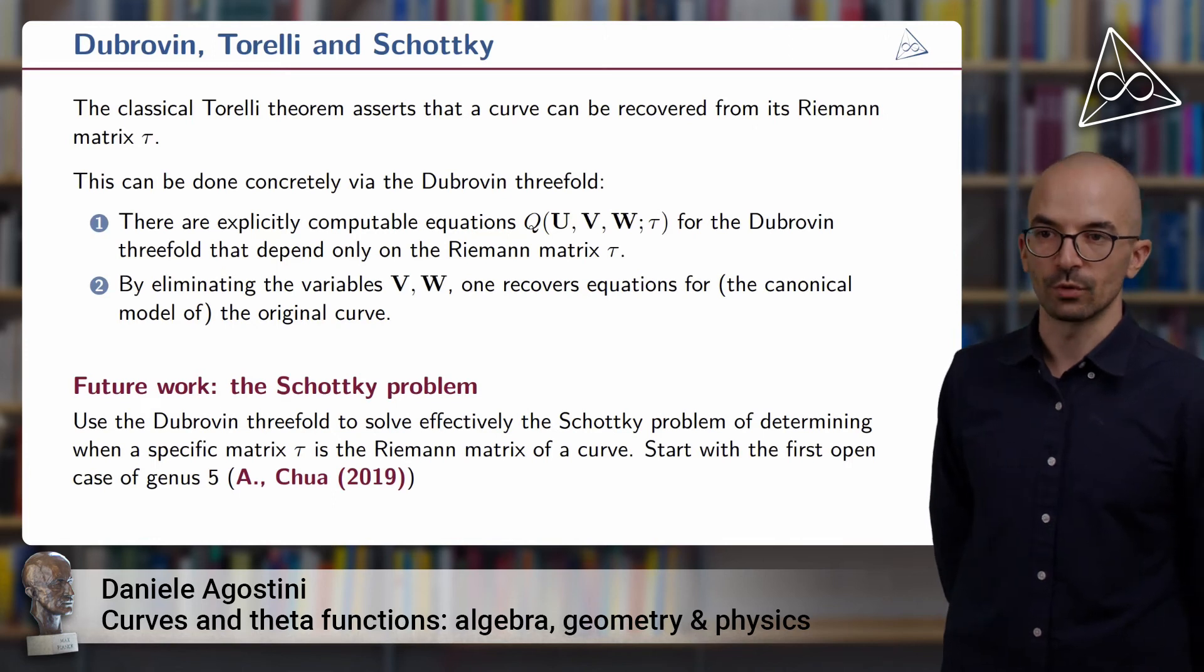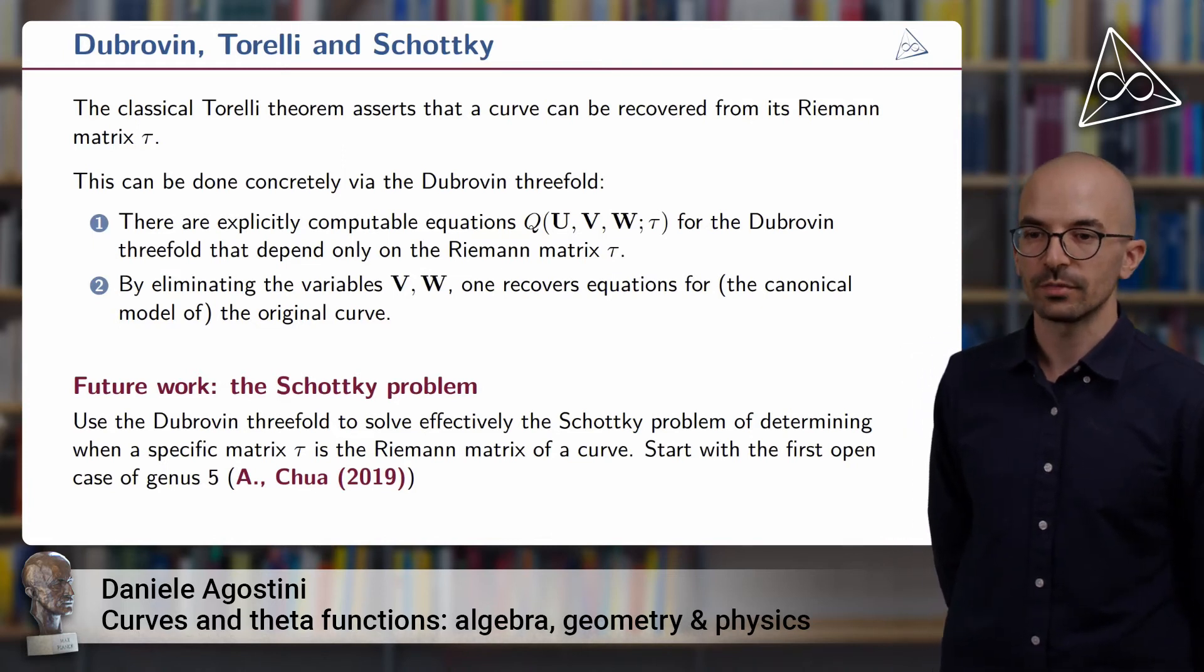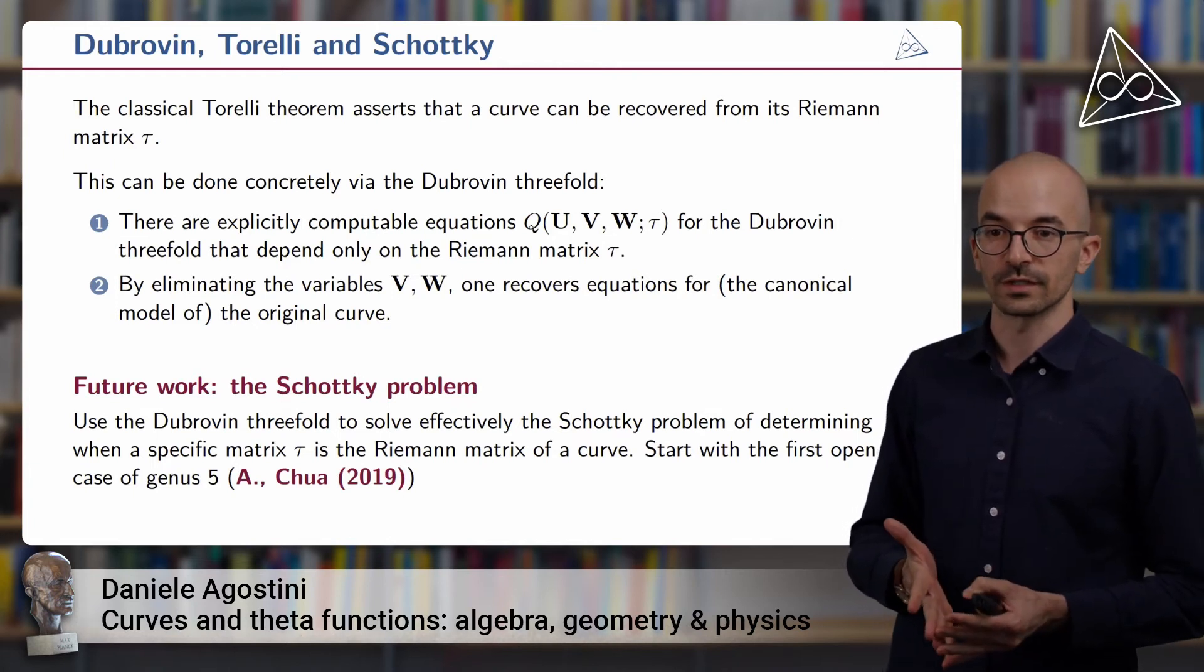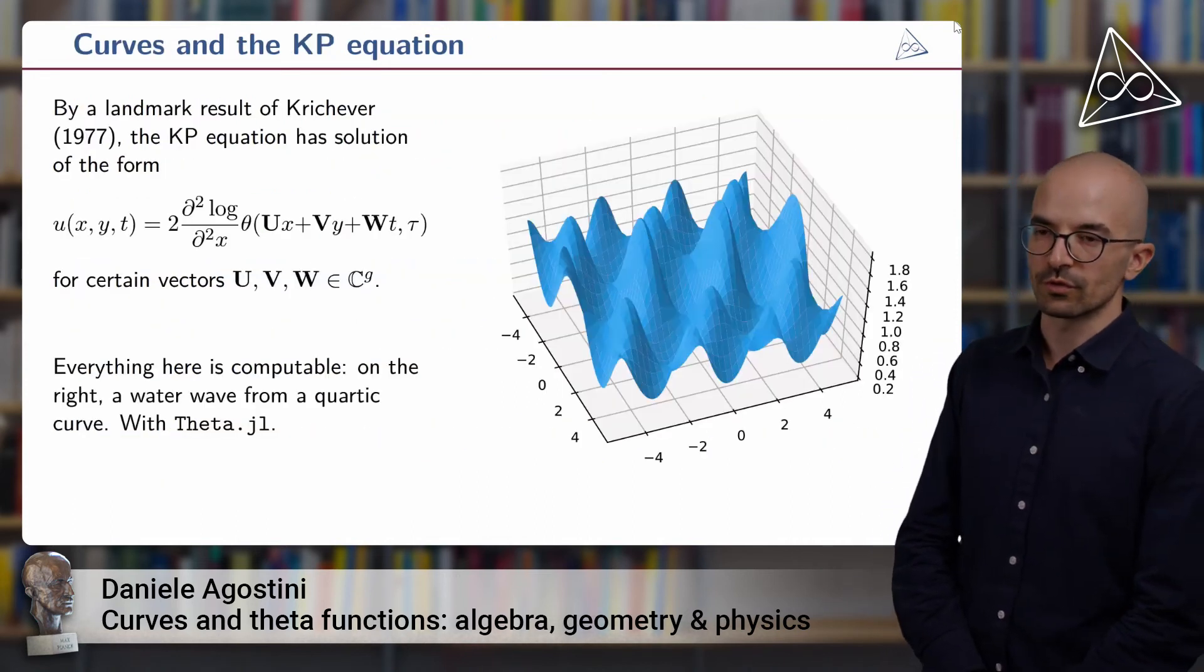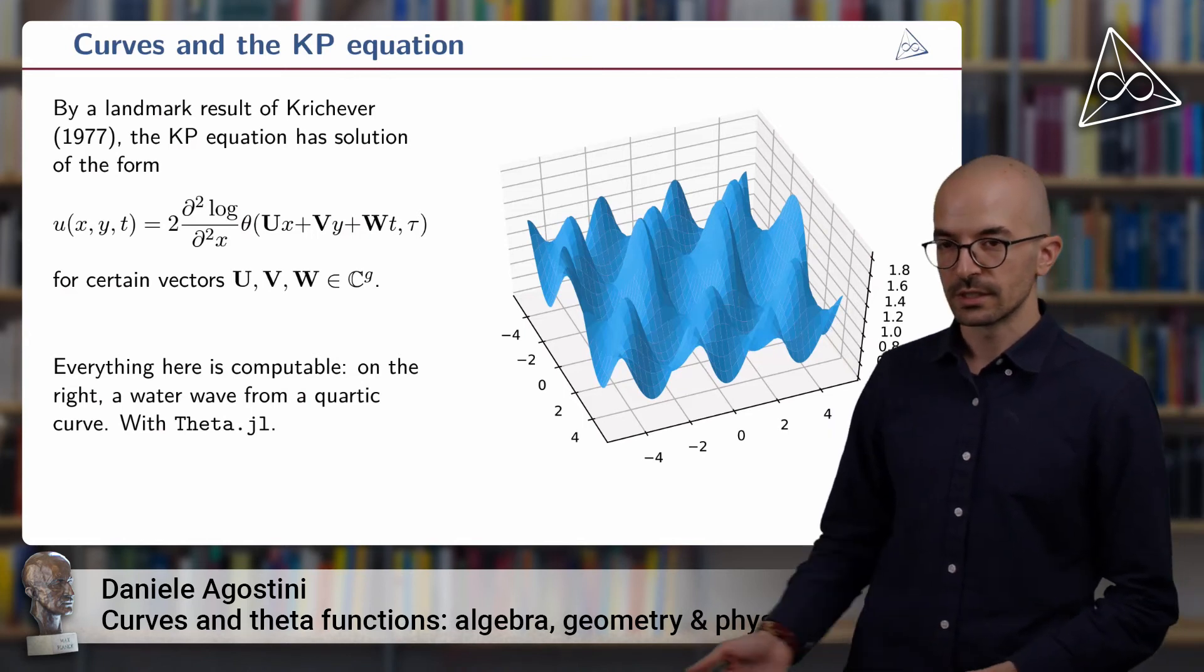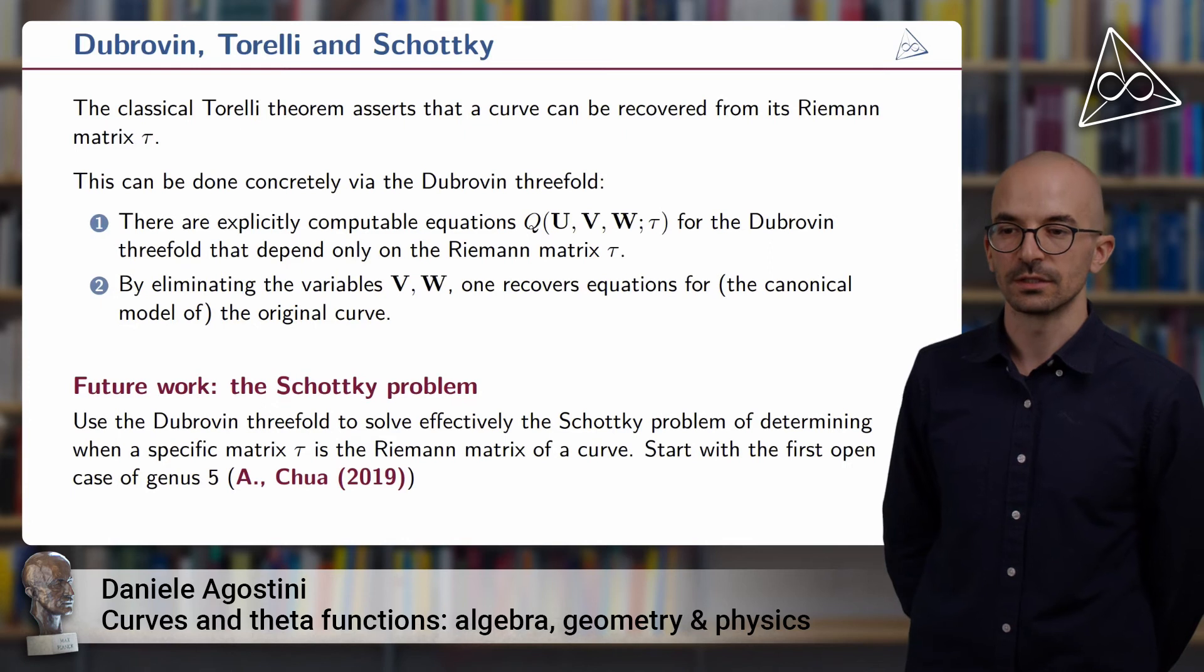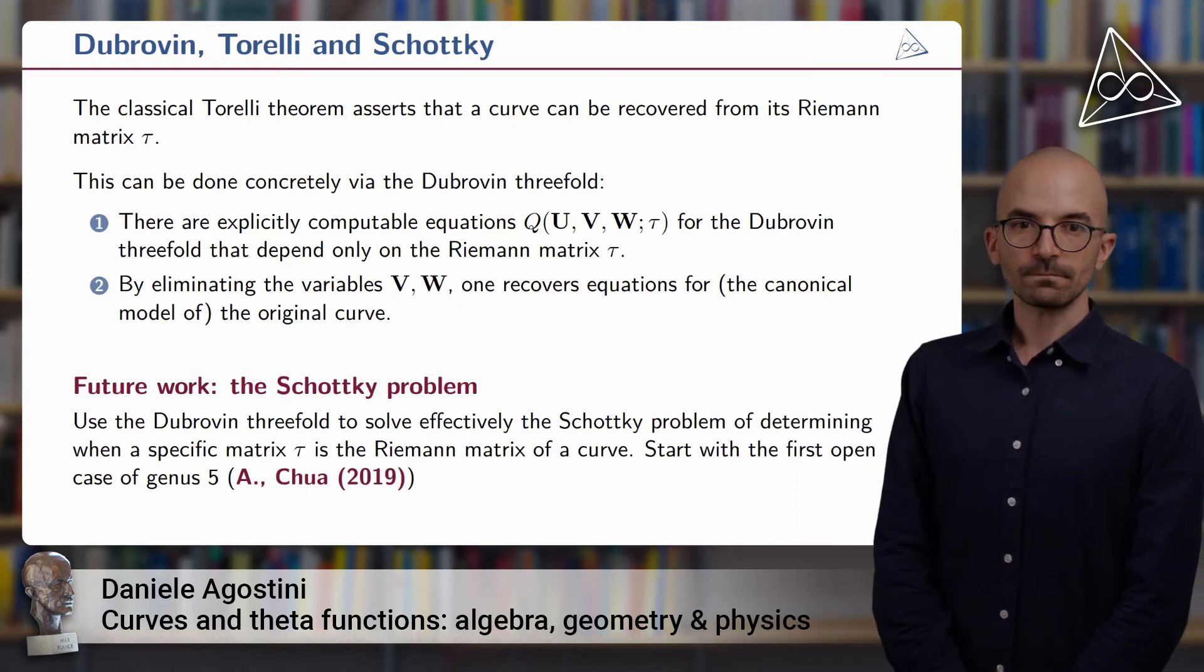This was already proposed by Dubrovin, and in future work, I plan on using these ideas to tackle a different and more difficult problem, the Schottky problem. The Schottky problem is another classical problem in algebraic geometry, which asks to decide for any given Riemann matrix tau whether it comes from a Riemann surface or not. This is actually solved in terms of the KP equation. It was proven by Shiota that a Riemann matrix tau comes from a Riemann surface if and only if there exist parameters u, v, and w such that the expression over here is a solution to the KP. However, this is not effective, so it cannot be implemented on a computer. And I plan on working on this in the future, starting with the first open case of genus 5. And this will build on previous work that I've done together with Lynn Chua.